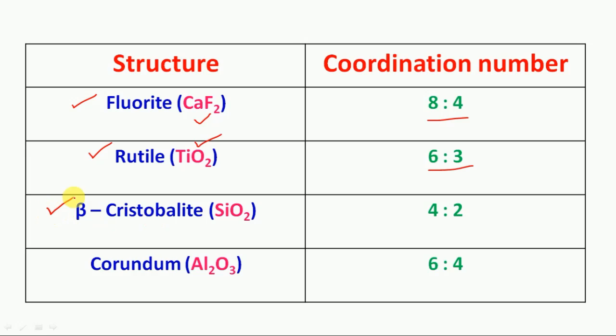Beta cristobalite, the formula SiO2, silicon dioxide. The coordination number of beta cristobalite is 4:2.